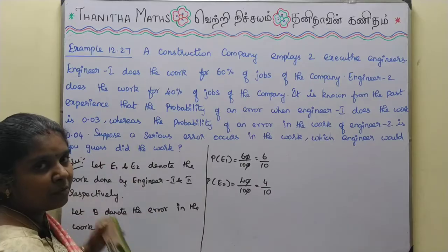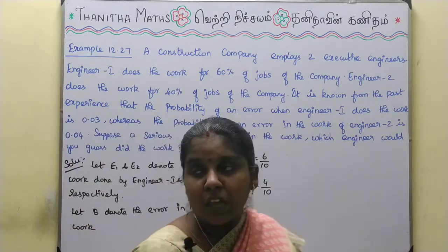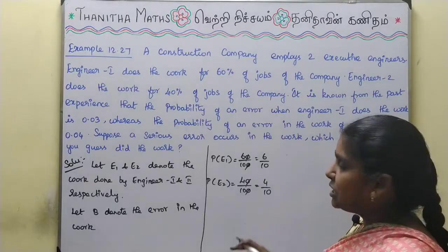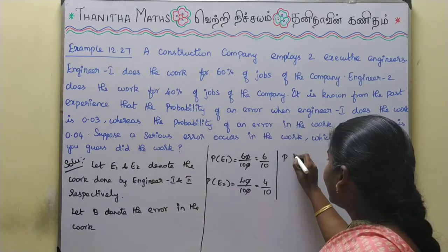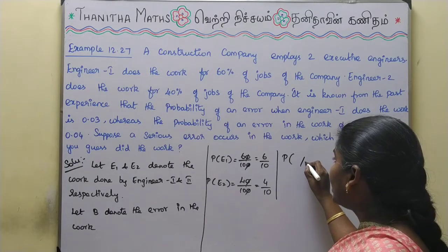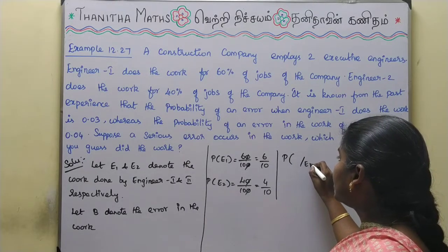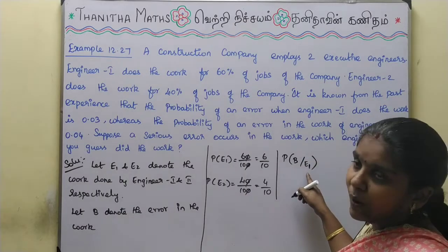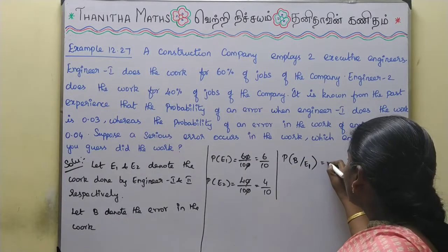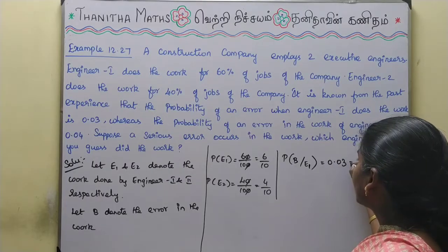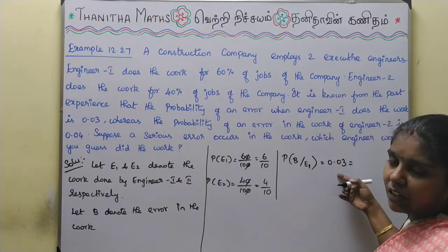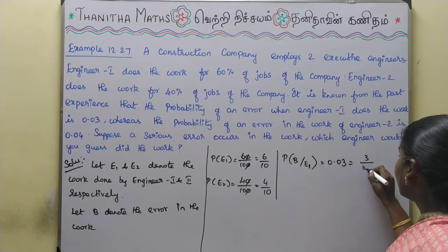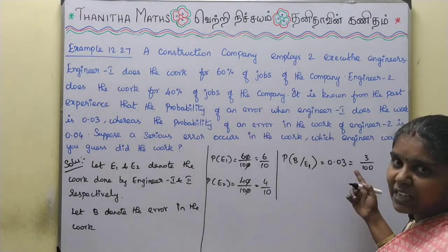The percentage will be in decimal form. P of B given E1 — the probability of an error given Engineer 1 did the work — is 0.03. That is 3 percent, which as a fraction is 3 by 100.